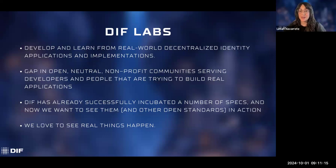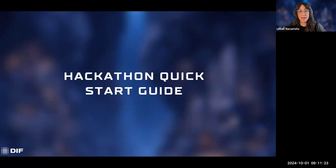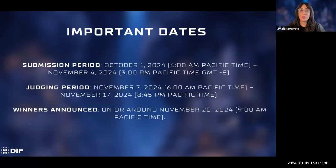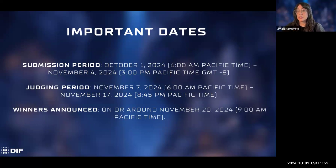Moving on, I'll do a quick overview of how you can get started with the hackathon. First, important dates: the submission period runs from October 1 through November 4 at 3 PM Pacific — that's Greenwich Mean Time minus eight. The judging period is November 7 through November 17, and winners will be announced during a live session on November 20. If there are any ties or anything that may delay that, we will let you know, but we anticipate everything being set on November 20.